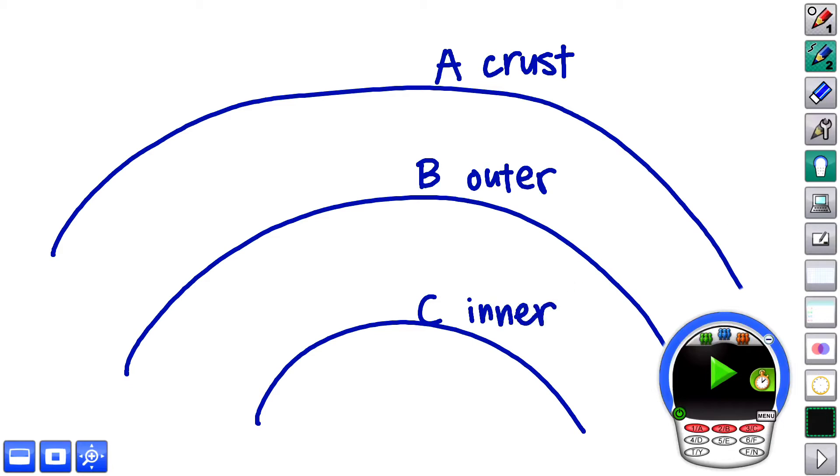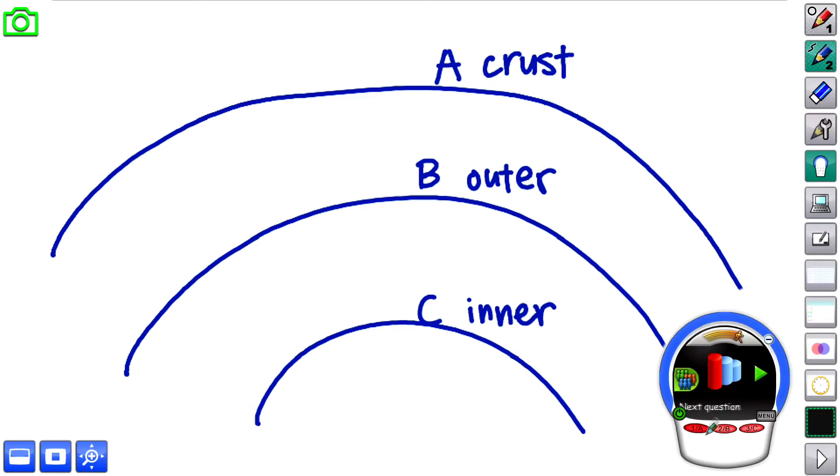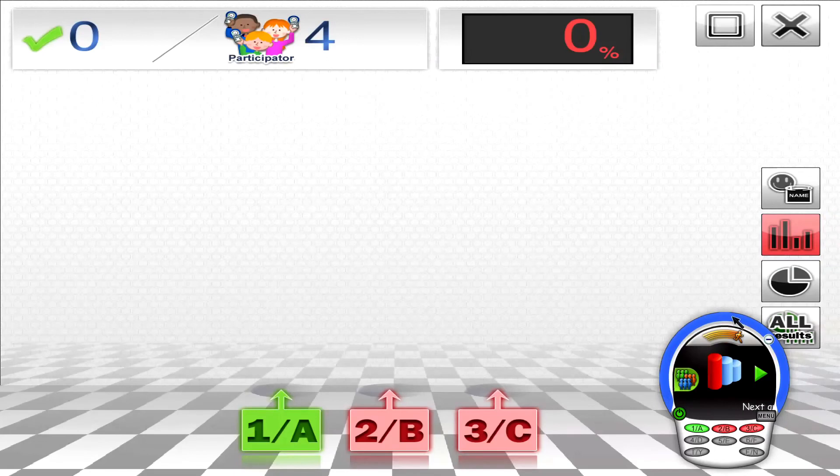There's three choices. So I'll select 3C and start the time. When I'm finished, I can press the stop, choose the correct answer, which is A, and then go to the results.